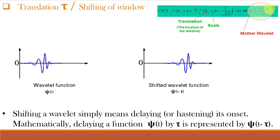In the Wavelet Transform equation, Tau means translation or shifting of the window. For example, if Psi of T is the Wavelet function, then the shifted Wavelet function Psi of (T minus Tau) is shifted from the origin. Shifting a Wavelet simply means delaying or hastening its onset. Mathematically, delaying a function Psi of T by Tau is represented as Psi of (T minus Tau). So, the mother Wavelet translated by Tau gives the daughter Wavelet.